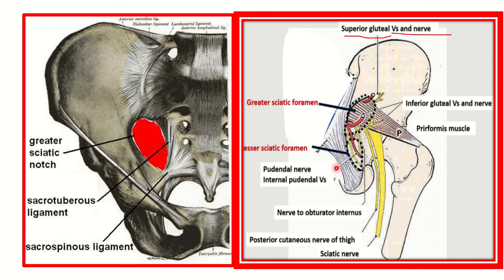All these structures pass through the greater sciatic foramen: superior gluteal nerve and vessels, inferior gluteal nerve and vessels, piriformis muscle, pudendal nerve and internal pudendal vessels, nerve to obturator internus, posterior cutaneous nerve of the thigh, and sciatic nerve.